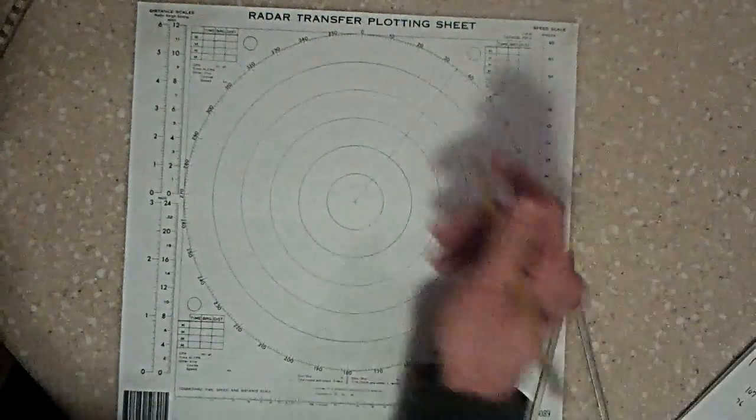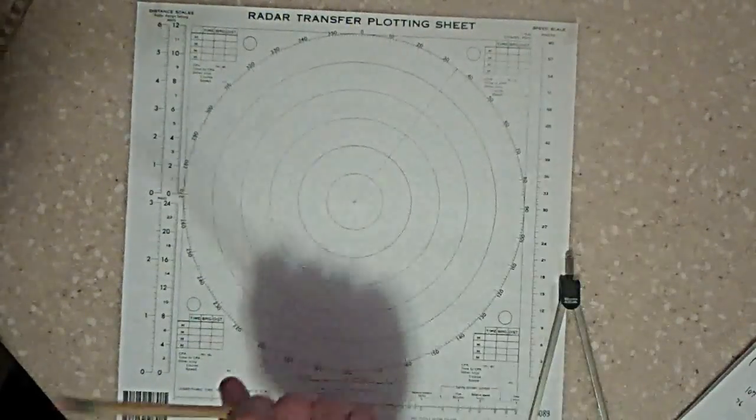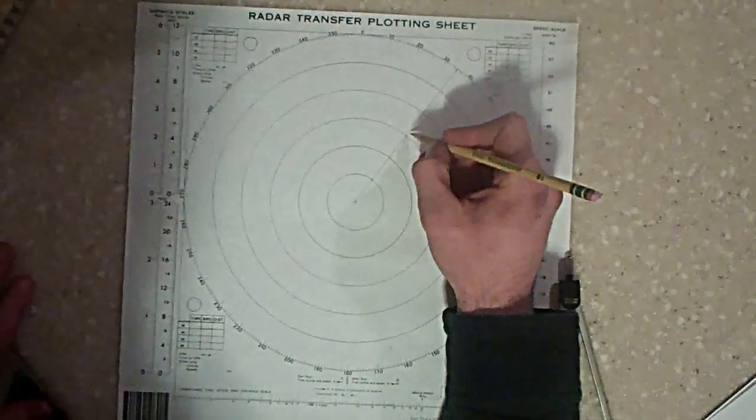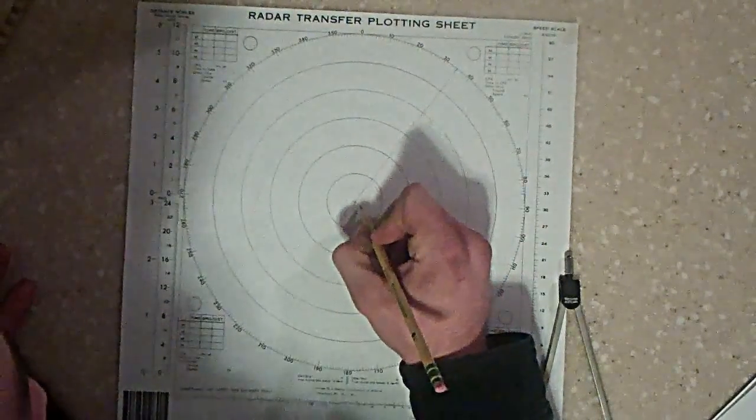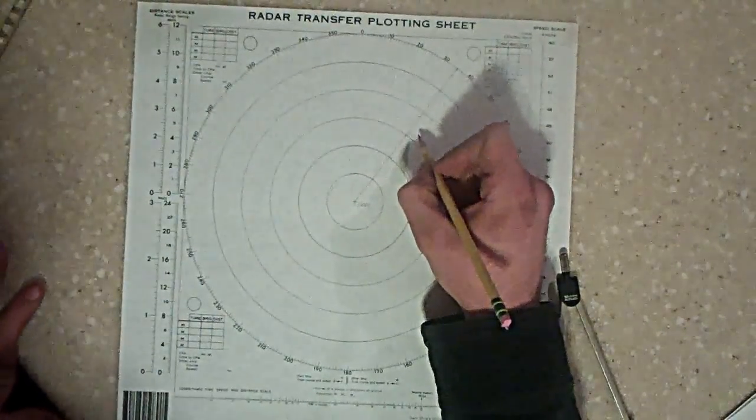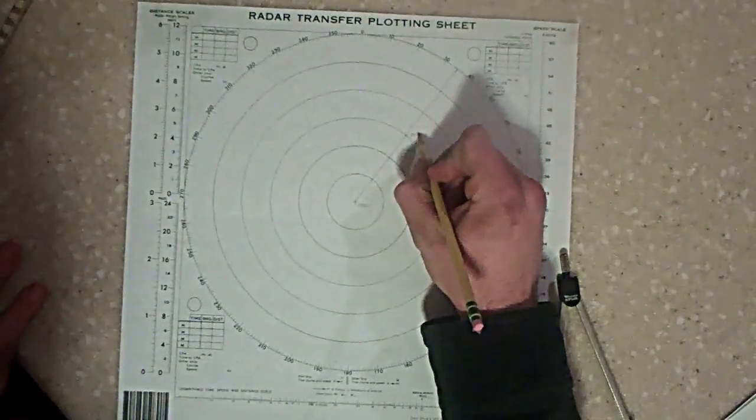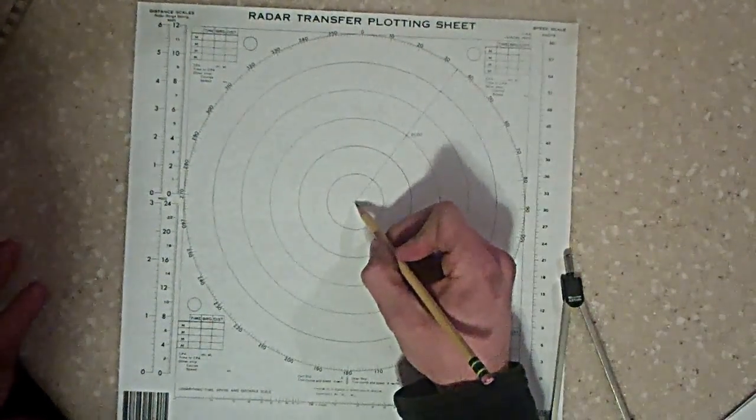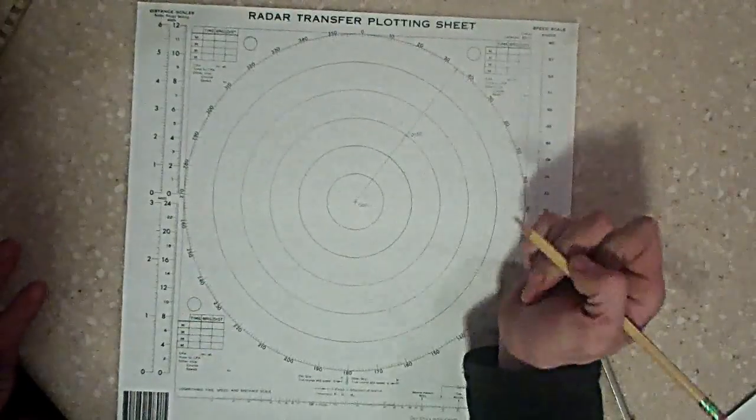Lands right on your range mark. So in one hour, if this is 0000, this is 0100. In one hour, you travel from here to here.